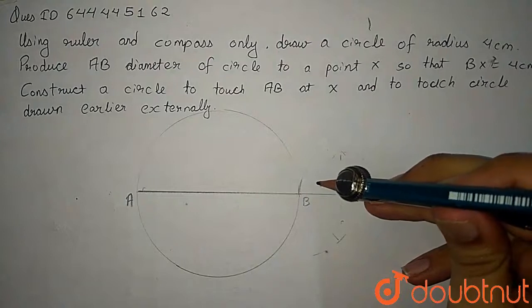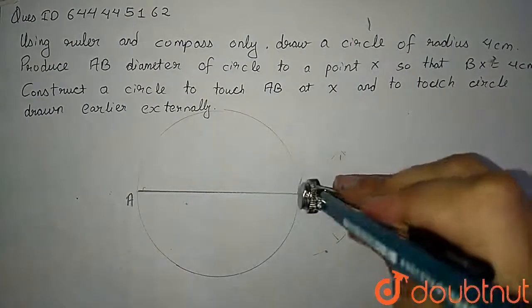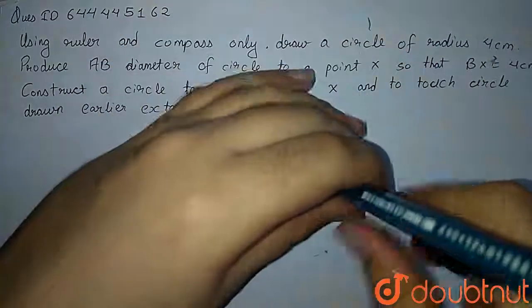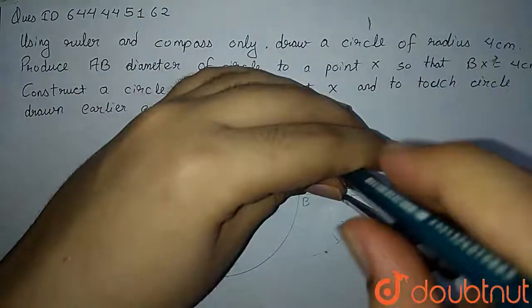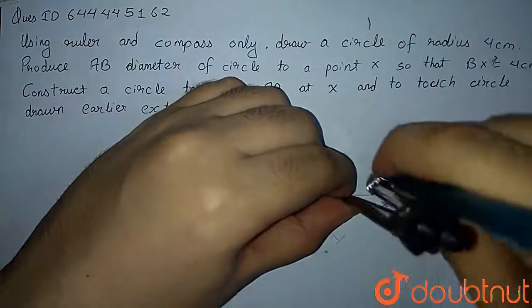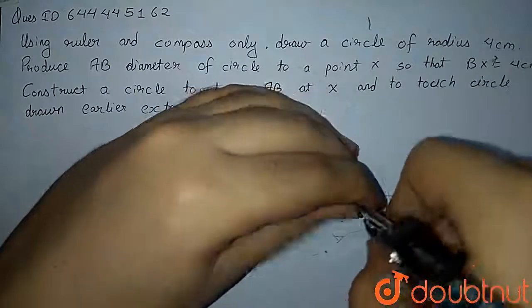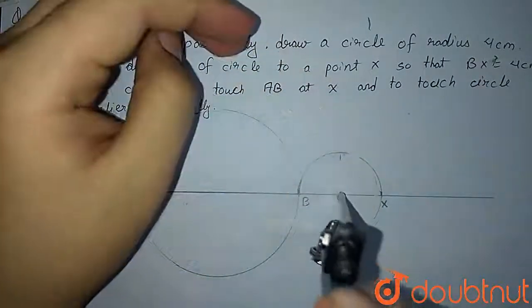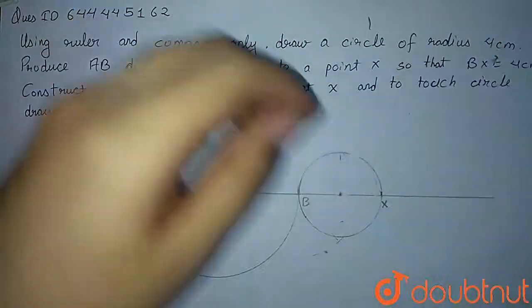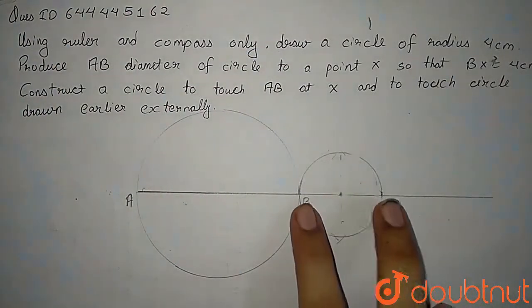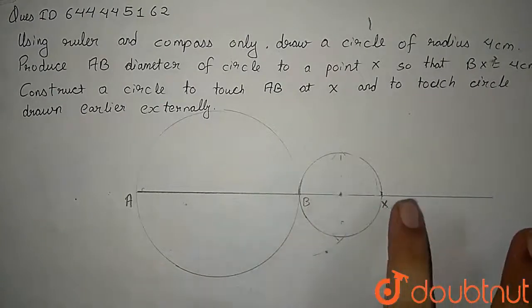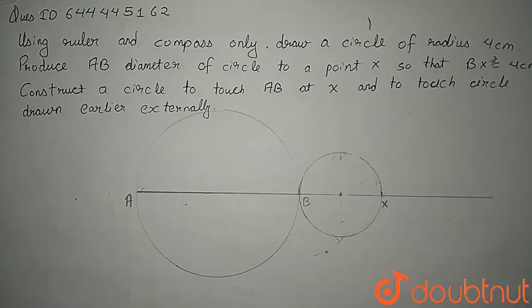Keeping my tip at this point and extending it till B so I will make a circle that is passing from this point, it will pass from X. So this is my circle that is passing from this point, it is touching this circle externally and it is passing from X. So this was the construction.